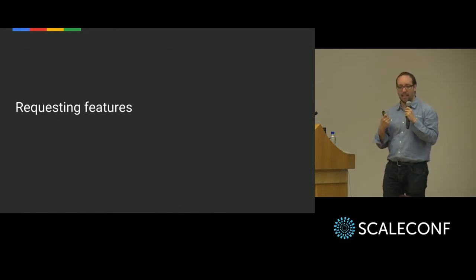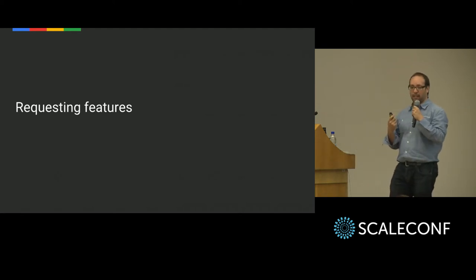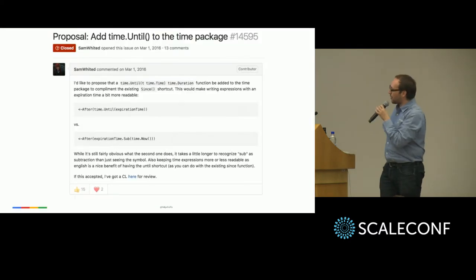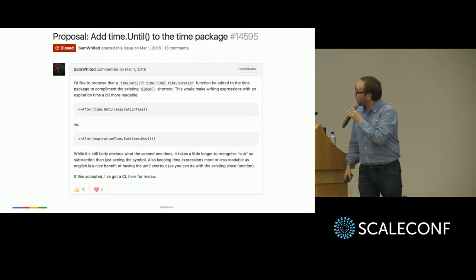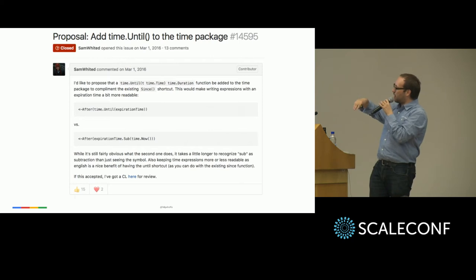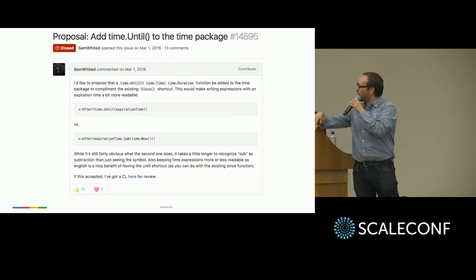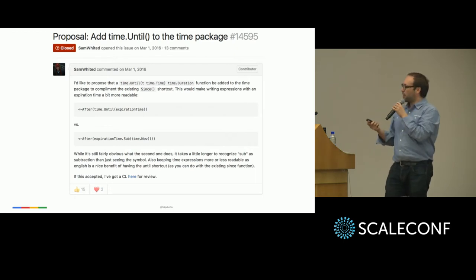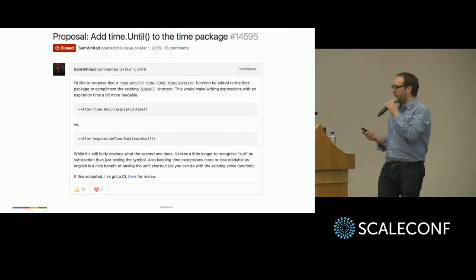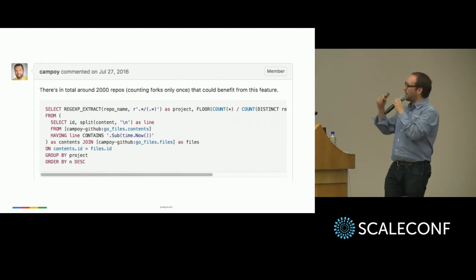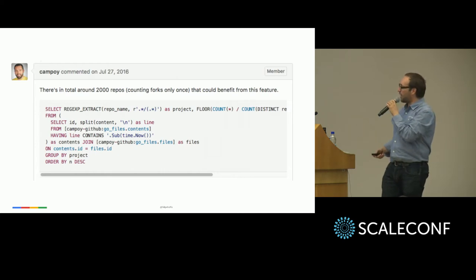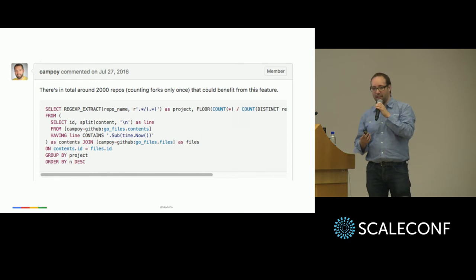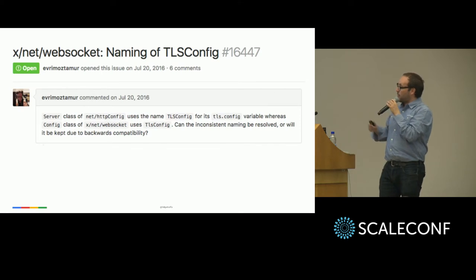How do you request new features when you want a project to act on your desires? You can use data. This guy was asking for the Go language — he wanted to write 'after time.Until' instead of 'time.Sub(expiration, time.Now())'. The Go team had to decide whether to implement it. My then-teammate Francesc ran a query analyzing all the Go code he could find and found at least 2,000 repositories that would benefit from this feature. And then the Go team went and implemented it — so now it's available for all of you.